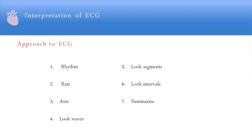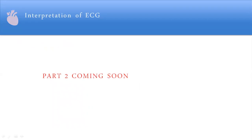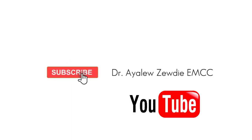To interpret an ECG, we follow steps systematically: rhythm, rate, axis, waveforms, segments, and intervals, looking for any peculiarities to identify. We print the ECG and then interpret it systematically following these steps. Thank you.